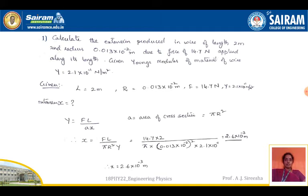What this problem defines is: calculate the extension produced in a wire of length L = 2 meters. The original length is 2 meters and radius R = 0.013 × 10⁻² meters. A force F = 14.7 Newtons is applied on such a wire. Young's modulus Y = 2.1 × 10¹¹ Newton per meter square.